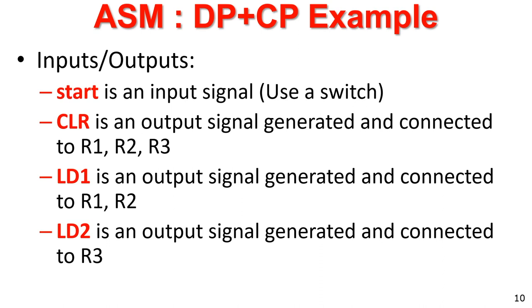The FSM controller has one input — start — and three outputs: CLR, LD1, and LD2. Our ASM should generate these 3 signals. Clear should be generated whenever start is 0. When start is 1, it should load values, and in the next time step it should compute and store values — compute means by default it is a combinational element.